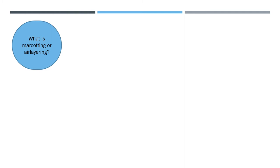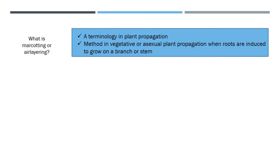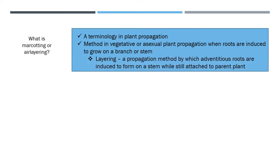So what is marcot cutting or air layering? In plant propagation terminology, air layering is a simple way of propagating fruit trees from their branches. It is a method of vegetative or asexual plant propagation where roots are induced to grow on a branch or stem while still attached to the parent plant. Air layering is one method within layering. There are other layering methods like root layering, serpentine layering, leaf layering, and several others.